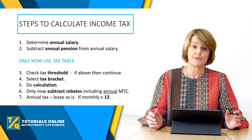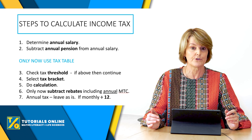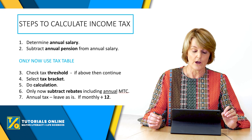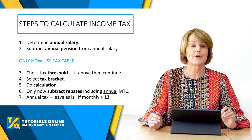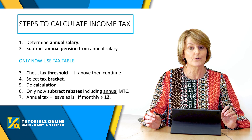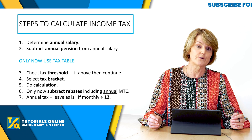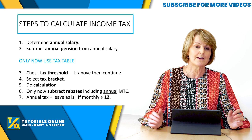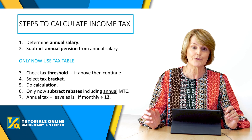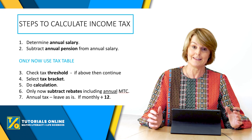Next, look at the tax threshold and then select the tax bracket. Then do your calculation using the tax bracket, and only after that do you subtract the rebates, including the annual MTC — the medical tax credits. That only gets subtracted at the end. If it's annual tax, leave it. But be careful — they sometimes ask for monthly tax, so then divide by 12. Let's work through a question now.